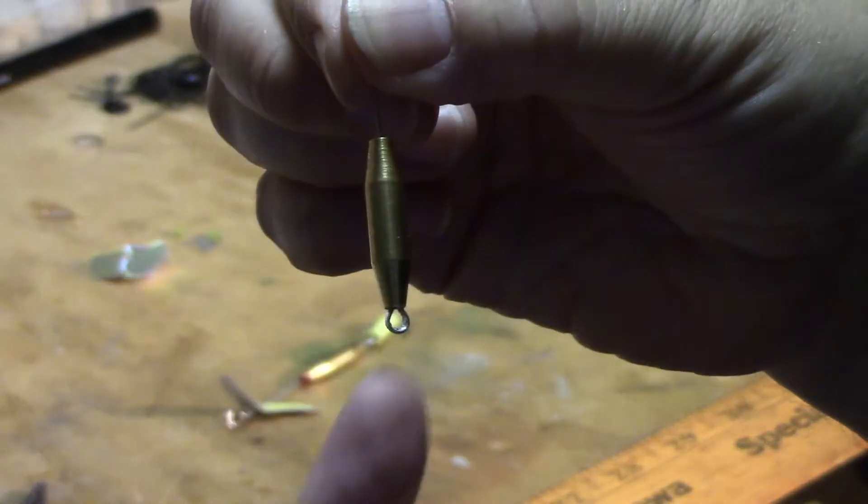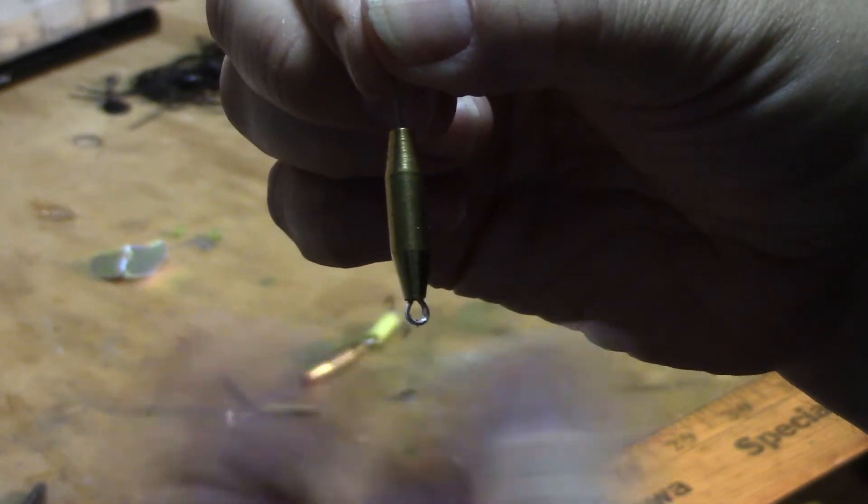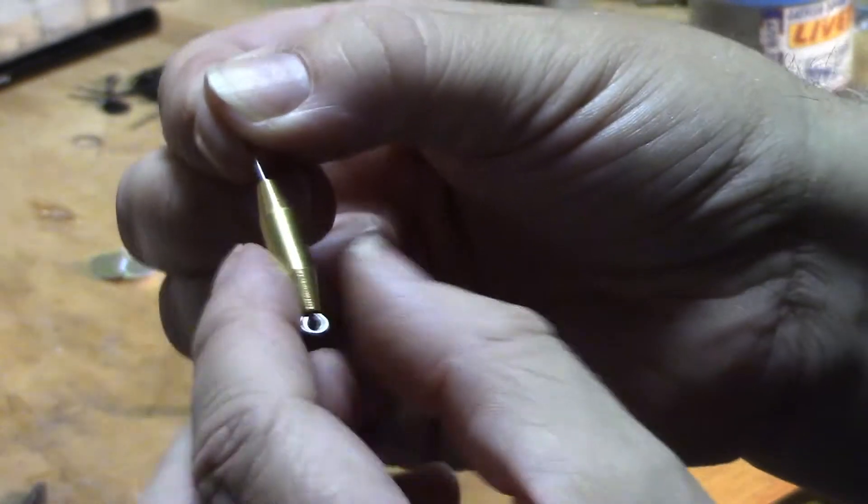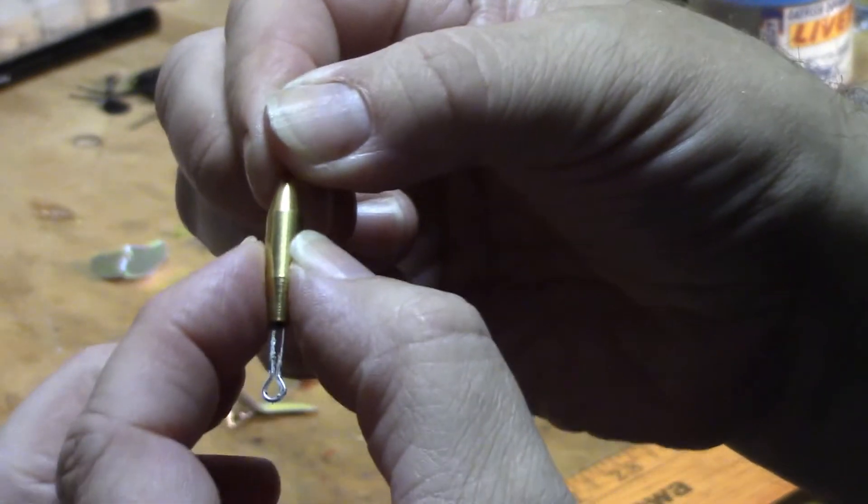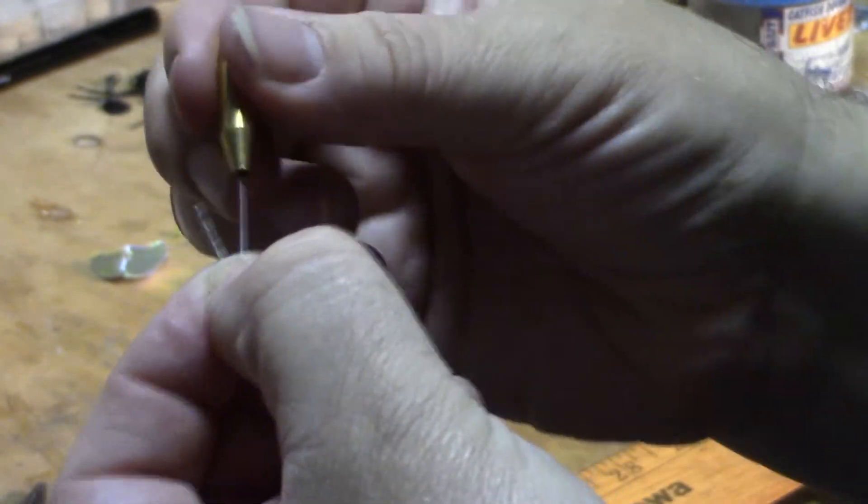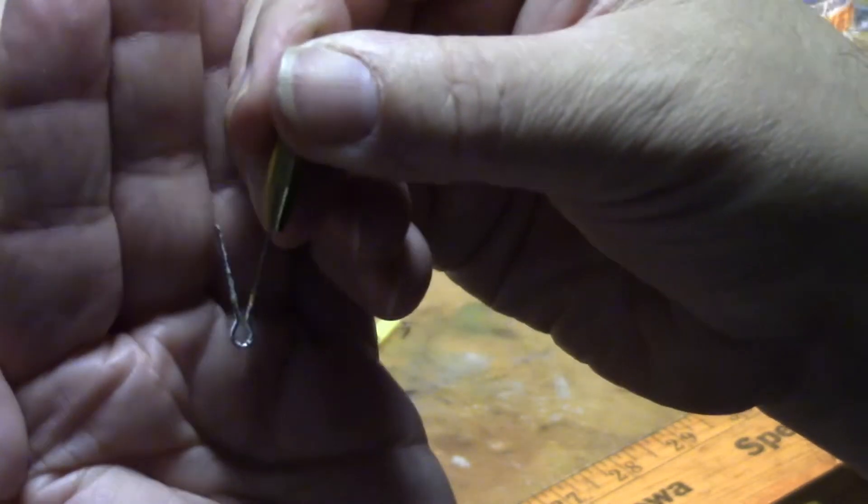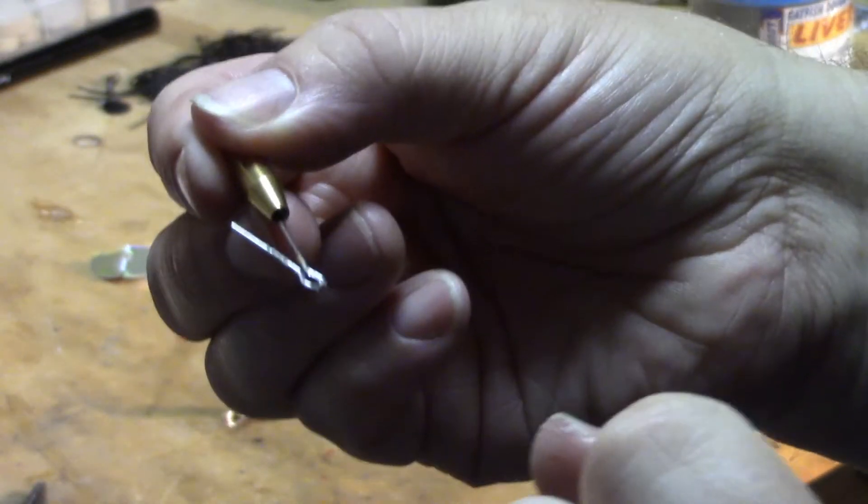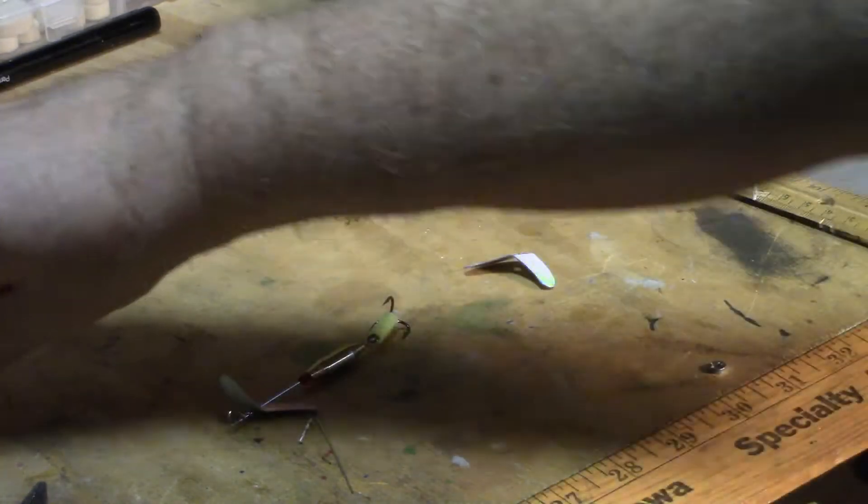But now this body can't come off because what happens is, you've got this here, this is where your hook would be, fish grabs a hold of that, starts going back and forth, he can shake that body off enough where that end opens like that. Then he will get off, you lose your fish hook, you lose your fish, and that poor fish swims away with the hook stuck in his mouth.